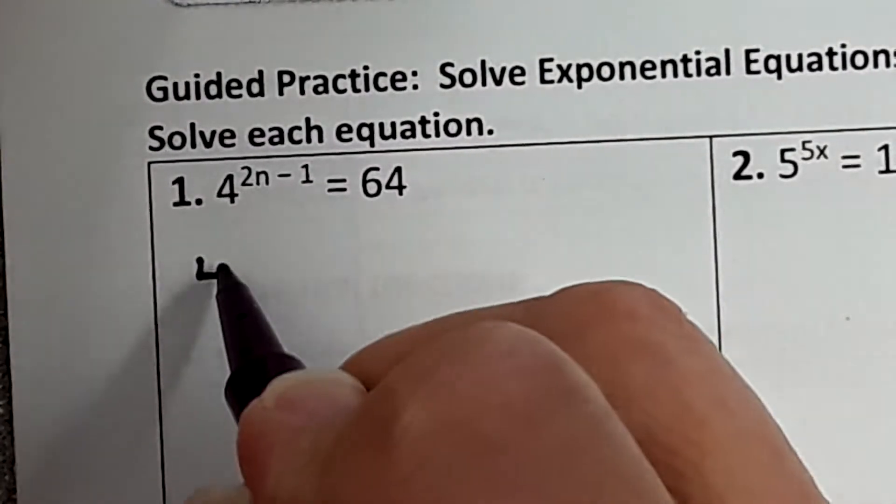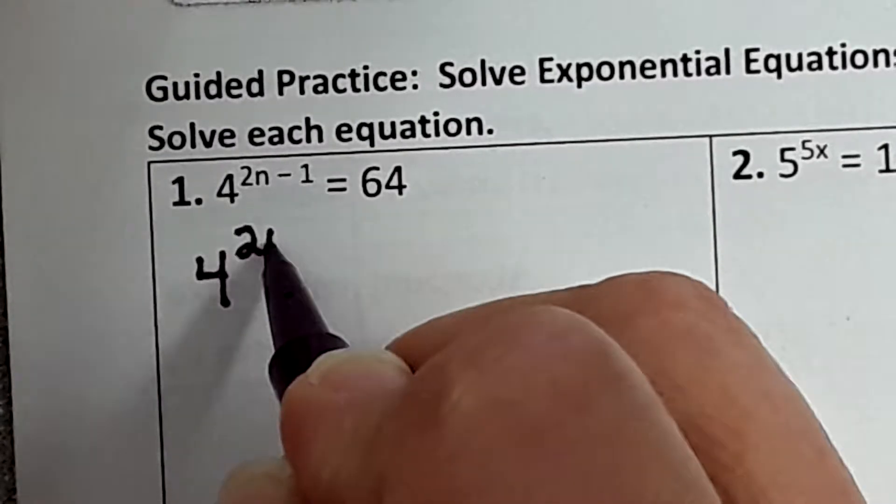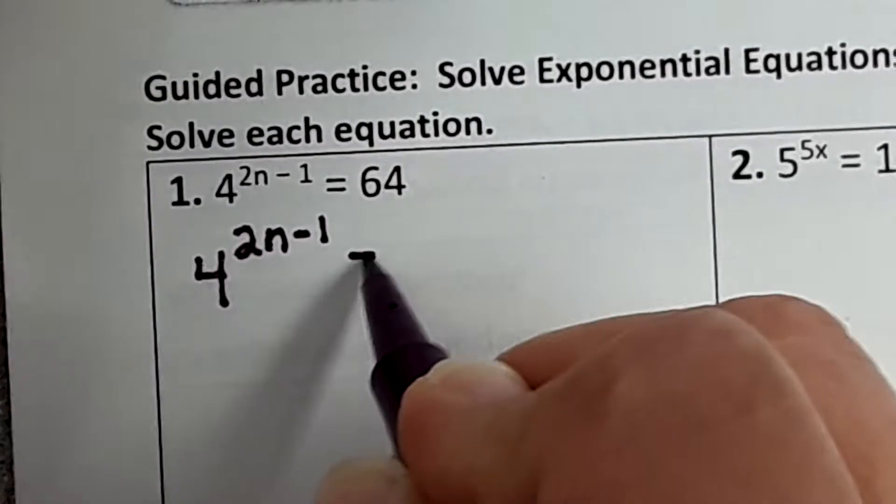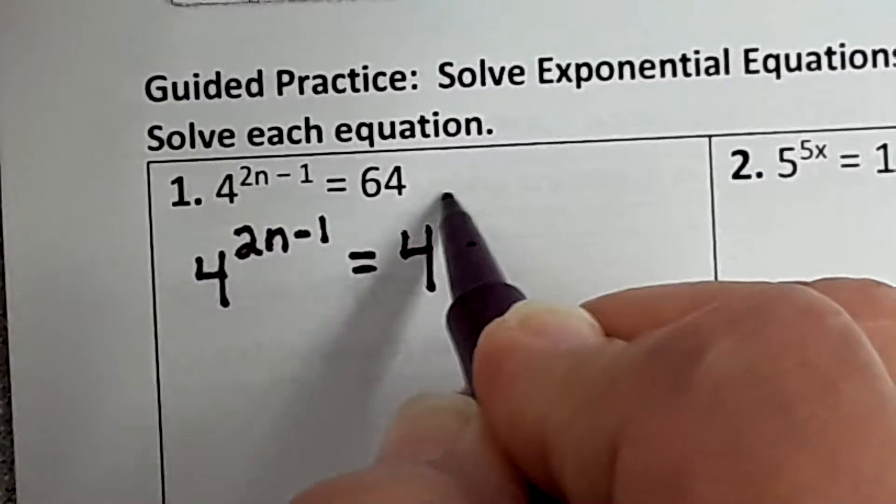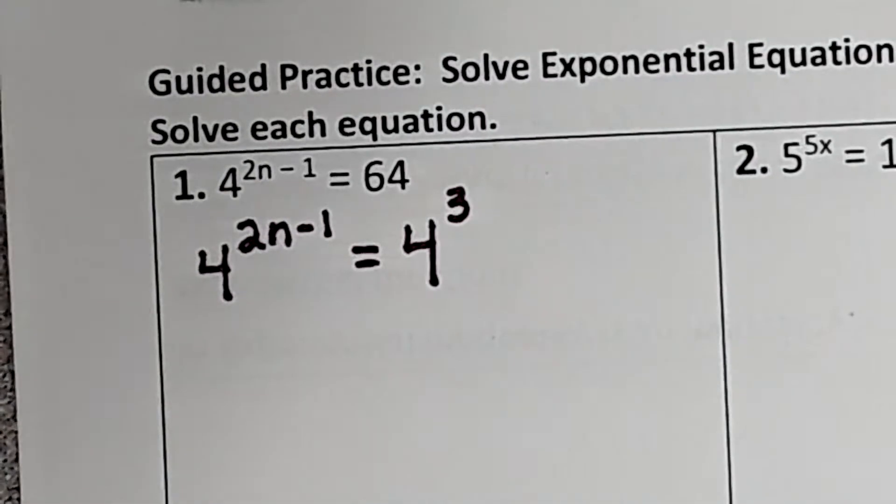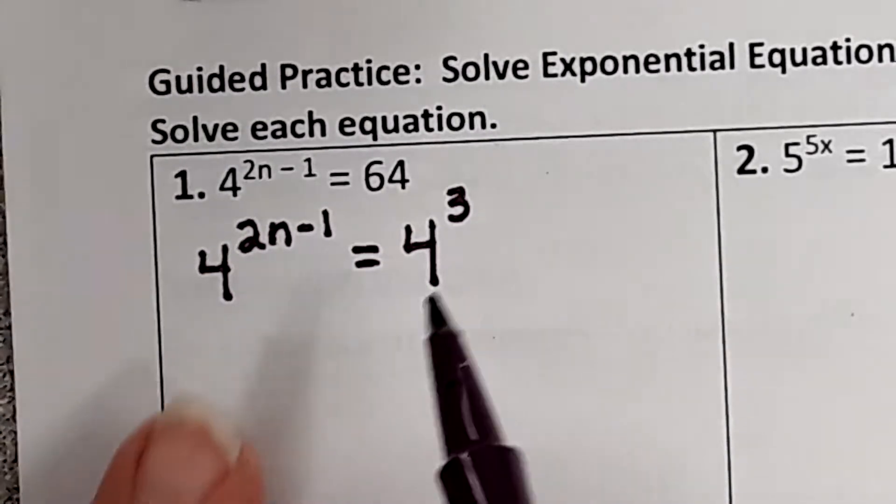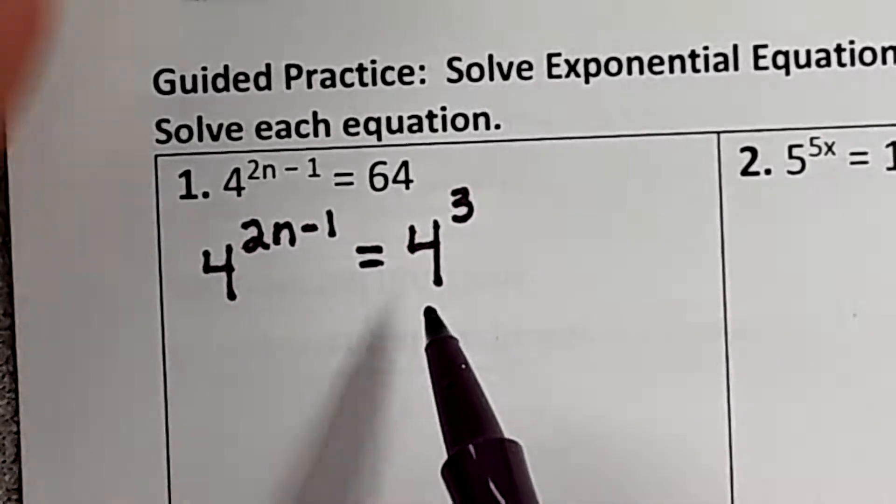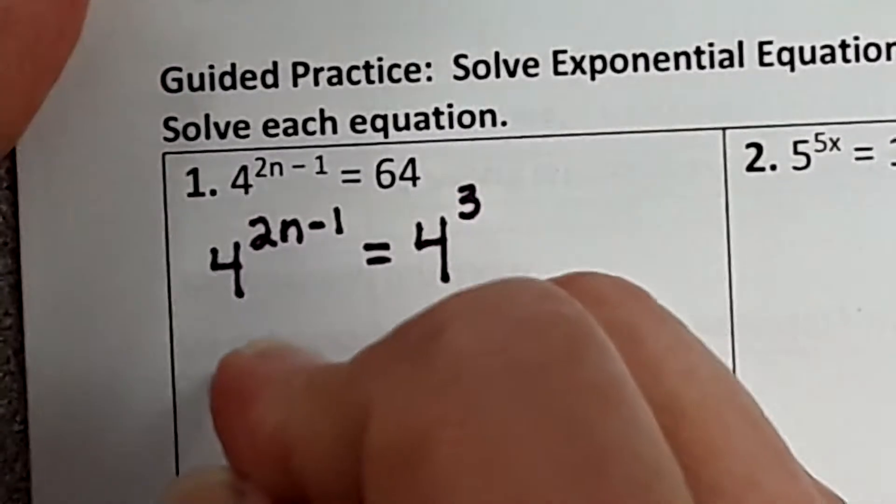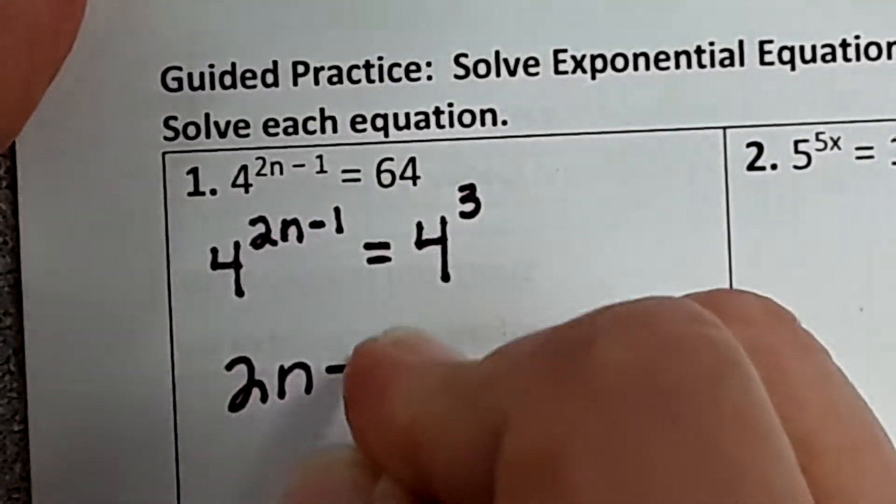So we're going to write 4^(2n-1) equals 4 to the third. There might be one that you can't make the larger number into the smaller number, so we might need to rewrite the smaller number. But in this case, we don't.